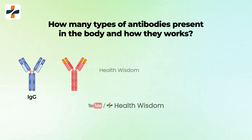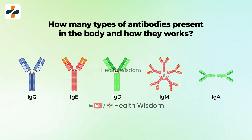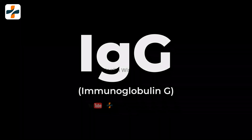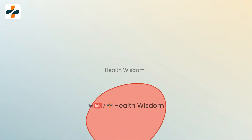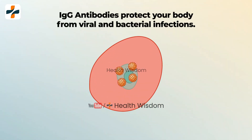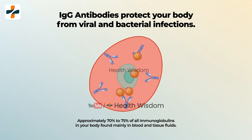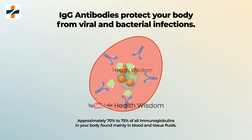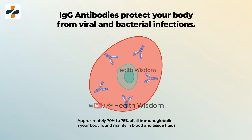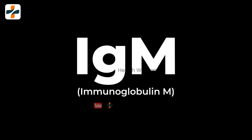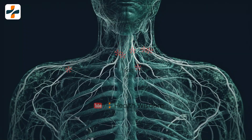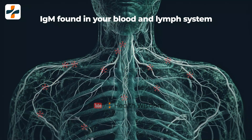There are different types of antibodies in the body. IgG is the most common antibody, making up approximately 70% to 75% of all immunoglobulins in your body. It's found mainly in blood and tissue fluids, and IgG antibodies help protect your body from viral and bacterial infections. IgM, found in your blood and lymph system, acts as the first line of defense against infections and plays a large role in immune regulation.